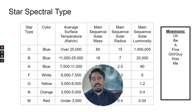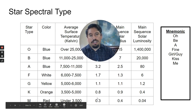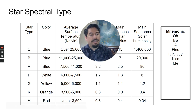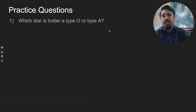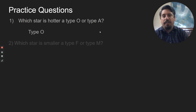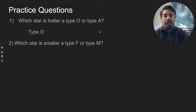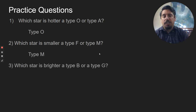Here are a couple of practice questions. Which star is hotter, type O or type A? If you think OBAFGKM — O is higher up, so O would be hotter. Which star is smaller, F or M? In 'Oh Be A Fine Guy/Girl, Kiss Me,' F is higher, so F is bigger, meaning M would be smaller. Which star is brighter, B or G? Using the mnemonic, B would be brighter.